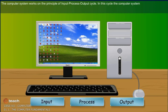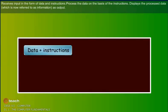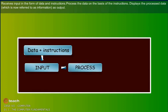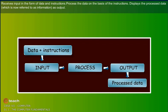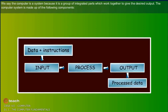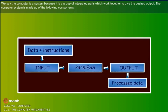In this cycle, the computer system receives input in the form of data and instructions, processes the data on the basis of the instructions, and displays the processed data — now referred to as information — as output. We say the computer is a system because it is a group of integrated parts which work together to give the desired output. The computer system is made up of the following components.